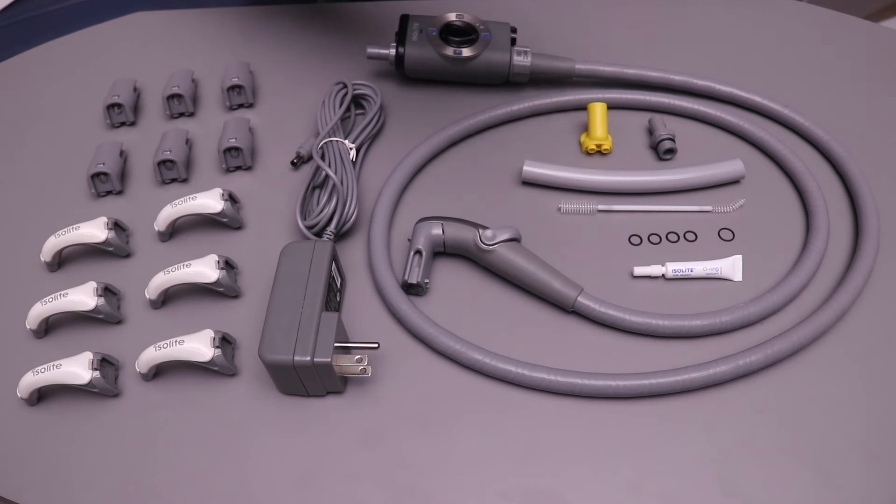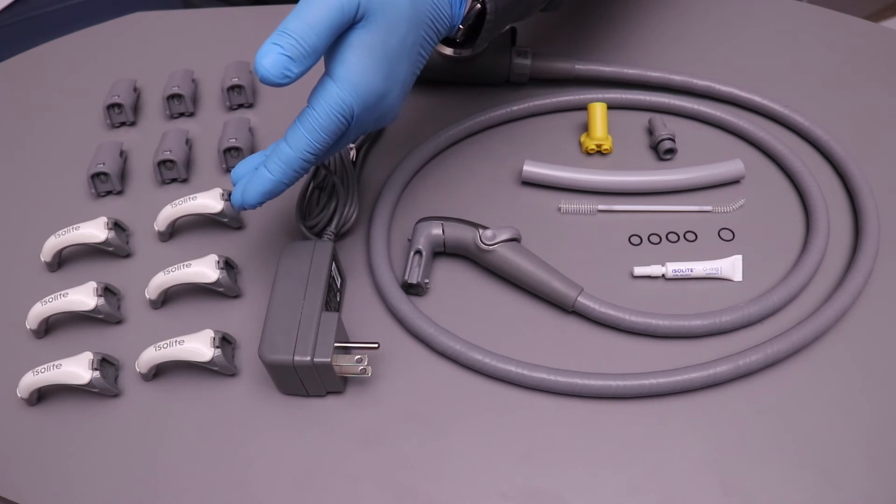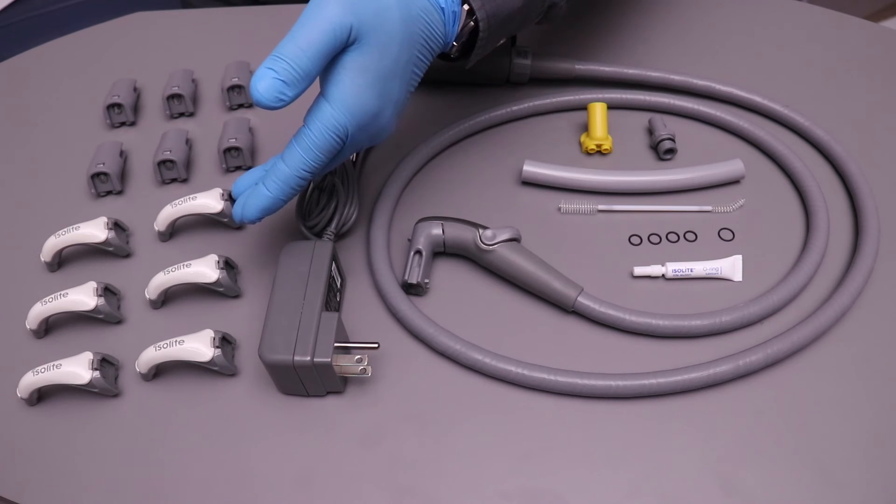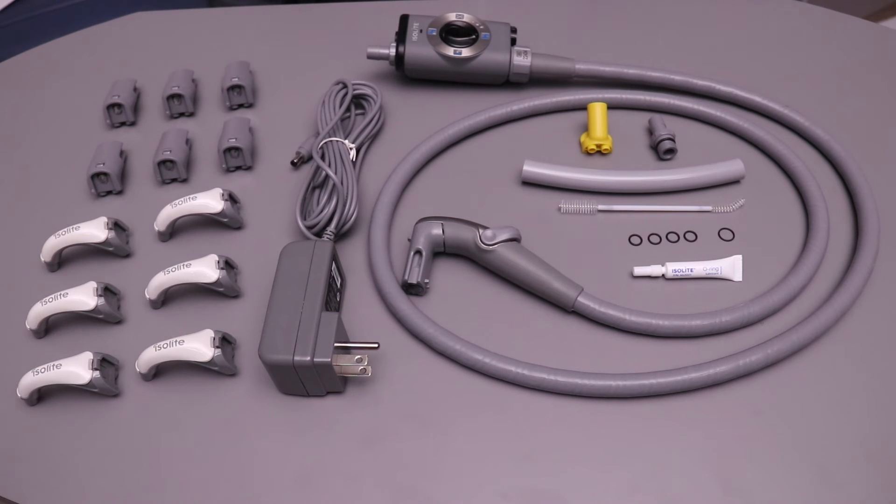O-ring lubrication is included. The system also comes with 6 vacuum light pipes for use with the posterior mouthpieces and 6 anterior adapters for use with the anterior mouthpieces.